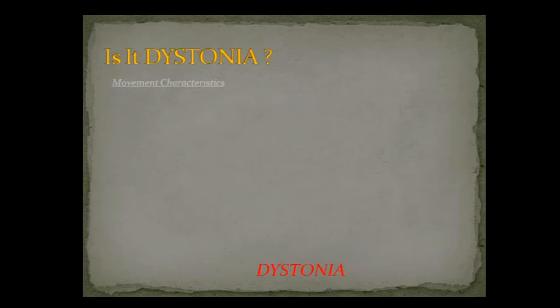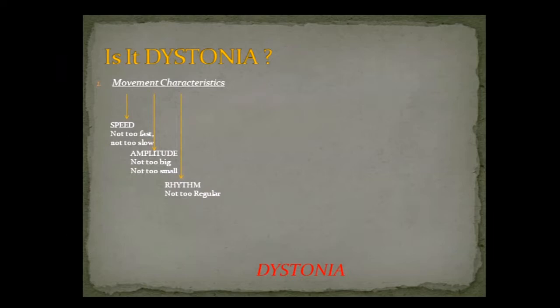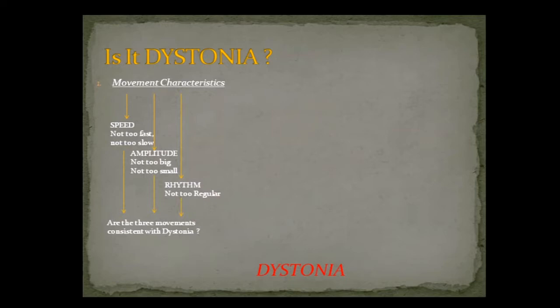When seeing a movement patient, you want to describe the movement characteristics. What is the speed? Myoclonus is a quick jerk versus tremor can be very slow in Parkinsonism. For dystonia, it's not too slow, not too fast. What is the amplitude? Parkinson's tremors are very small; ballism can be high amplitude — dystonia is somewhere in between. And what is the rhythm? Not as regular as tremor, not as irregular as athetosis or chorea — somewhere in between. If you get answers pointing that way, it may be dystonia.